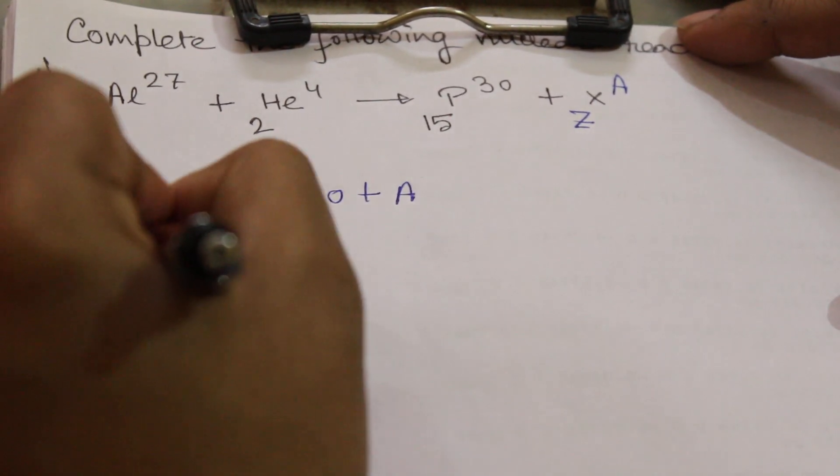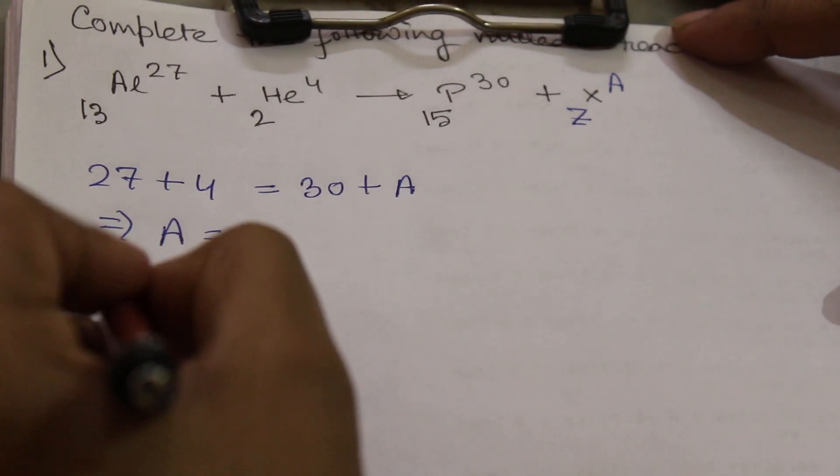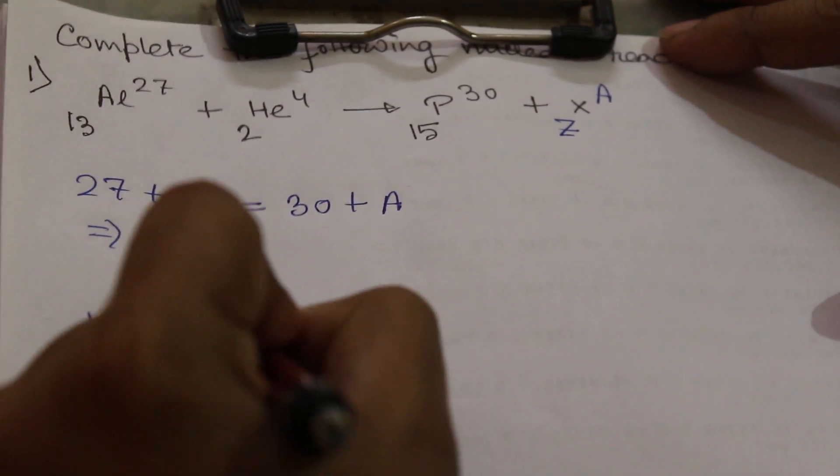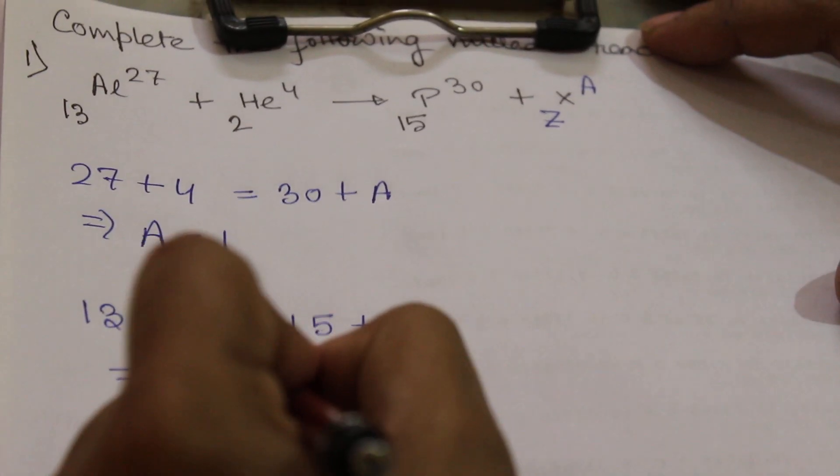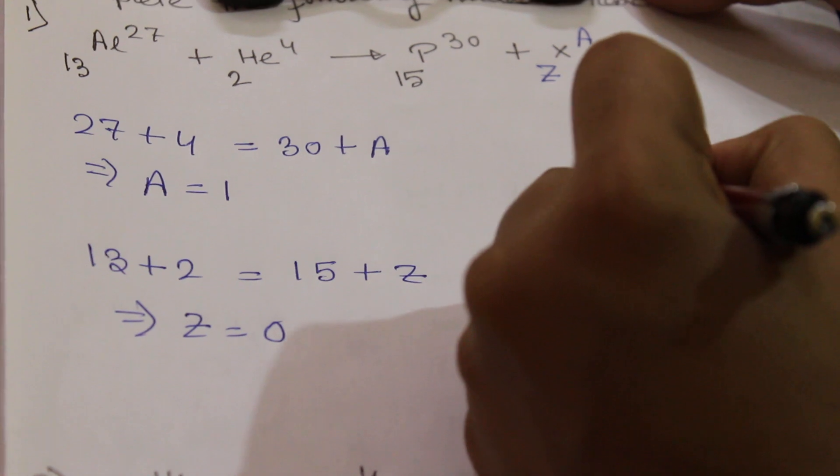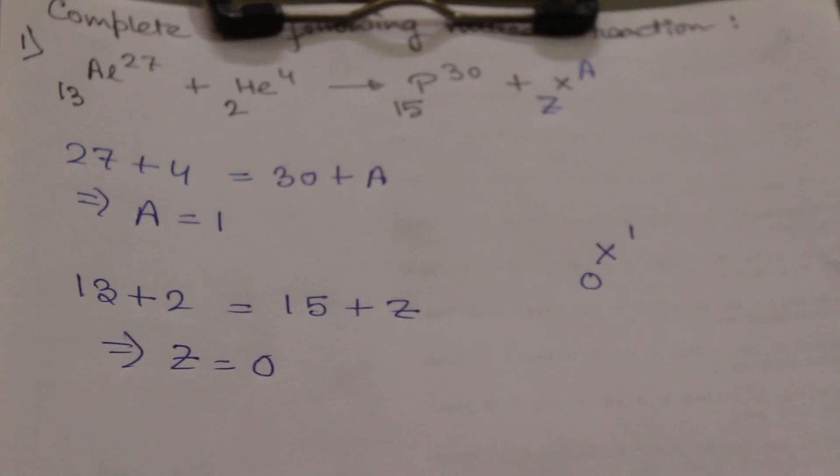From here we will get A equal to 1. And if we balance the atomic number, then 13 plus 2 equal to 15 plus Z. So Z is 0. So element is 1/0. This is nothing but neutron. So this X element is neutron.